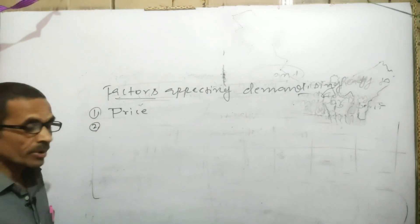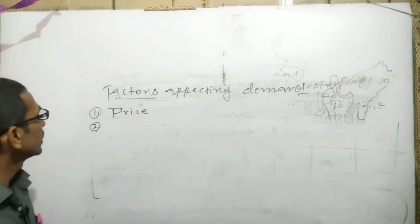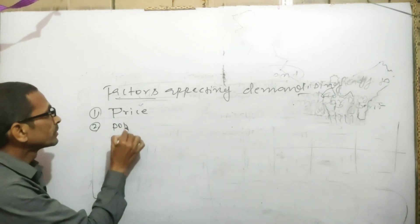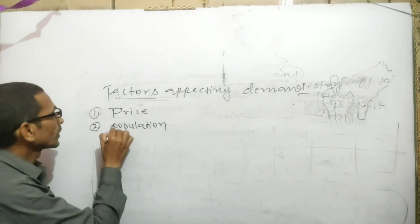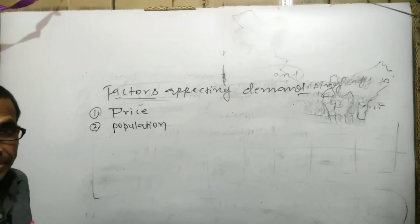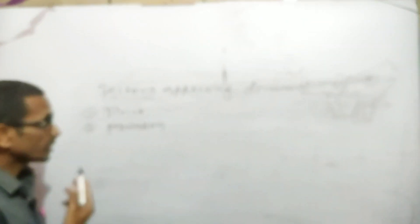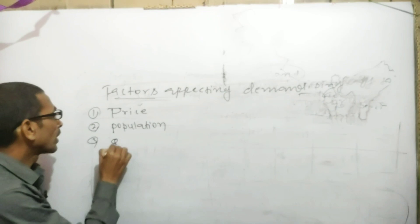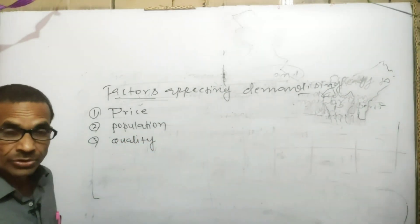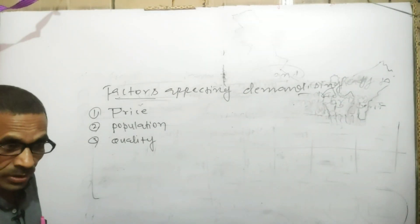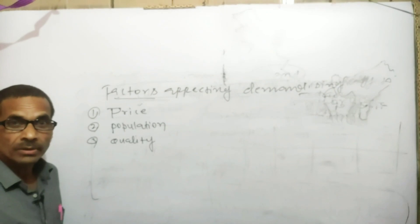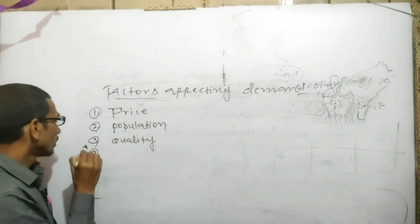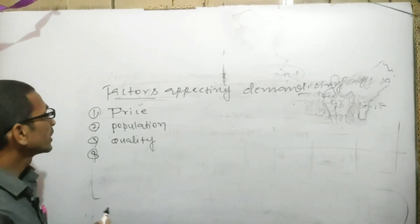Second major factor jo demand ke level ko fix karne mein ya usme aane wale rise aur fall ke liye responsible hai, woh hai population. Yadi population ke size mein koi change aa jata hai to naturally demand mein bhi change aayega. Teesra factor aap le sakte hain — quality of goods or service. Yadi kisi particular goods ya service ki quality mein koi change aata hai to uske demand mein bhi change aa sakta hai. Chautha factor hai income of consumer.